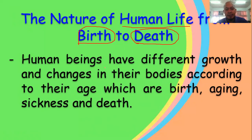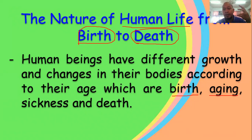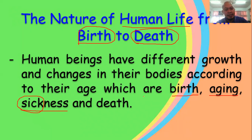Human beings have different growth and changes in their bodies according to their age, which are: birth — the day we were born; aging — meaning as we grow older, from young to adult; sickness — from the word sick; and death. Later we are going to discuss each one by one.